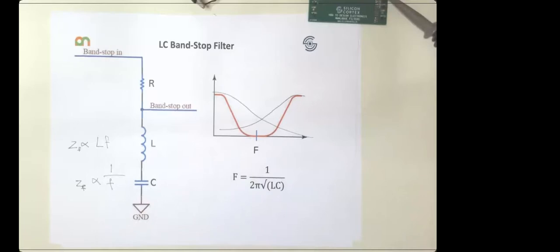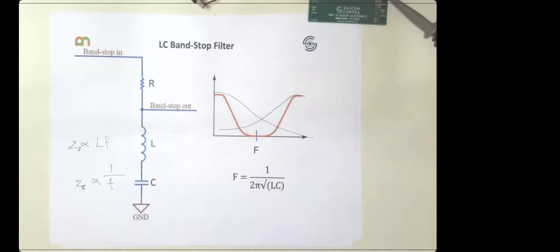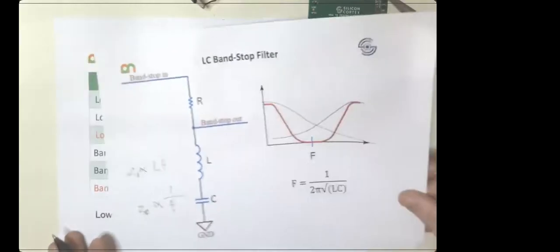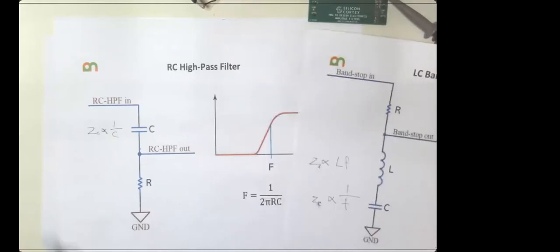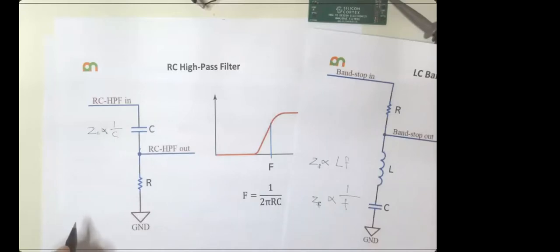You did say one thing which really opened my eyes just now - which was that if you just put an R instead of the L and C, what you've got there is a voltage divider. That's exactly what you have. If you then consider the L and the C to be resistances, albeit with weird characteristics, you can then see why they're doing what they're doing, because they're voltage dividing in a frequency-dependent way.